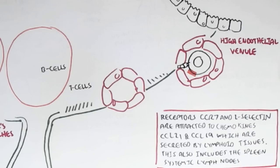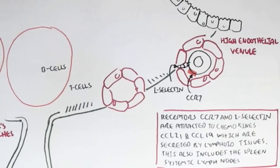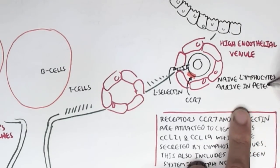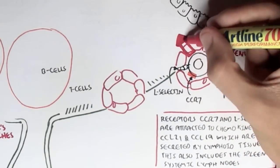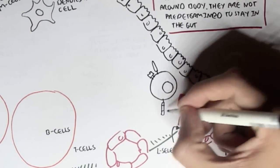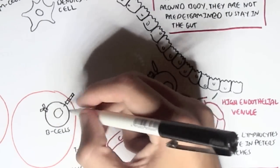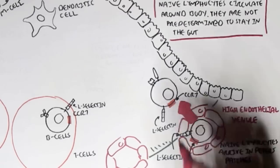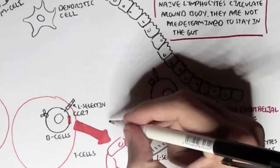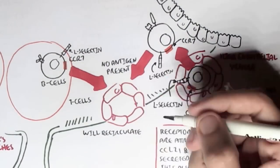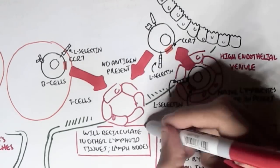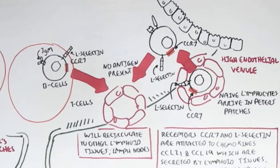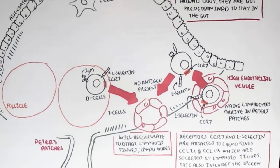So these lymphocytes can literally go anywhere where these chemokines are being secreted from. A lymphocyte in the high endothelial venules with L-selectin and the CCR7 receptor is attracted to the CCL21 and CCL19 chemokines coming from the Peyer's patches, and the lymphocytes will enter the Peyer's patches. If it's a naive T cell, it will stay outside the follicle; if it's a B cell, it would be within the follicle. If no antigen is present, the lymphocytes will recirculate through the bloodstream to other lymphoid tissues such as the lymph nodes or spleen.